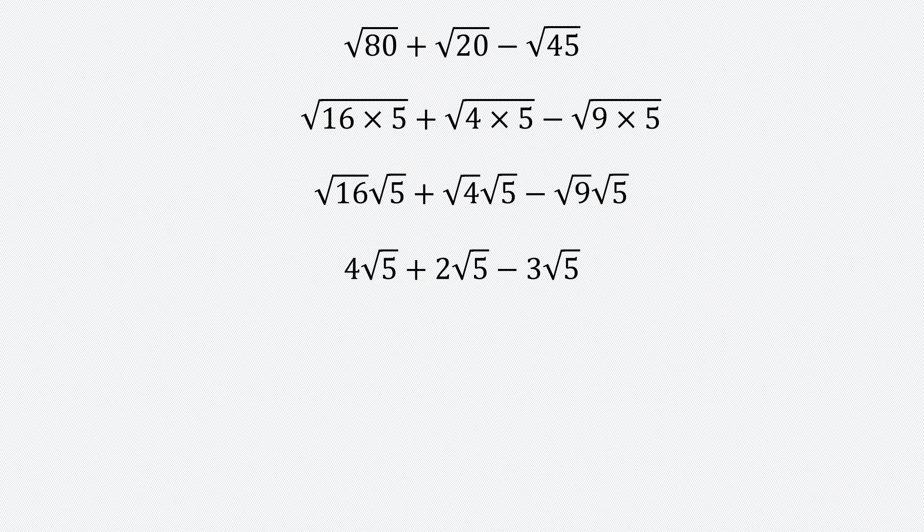So we have 4 plus 2 minus 3 all times root 5, right? So we factored out root 5 from the expression. We have 4 plus 2 minus 3 times root 5. Now we can simplify what's in the brackets.